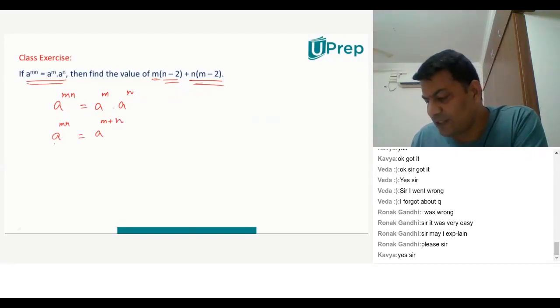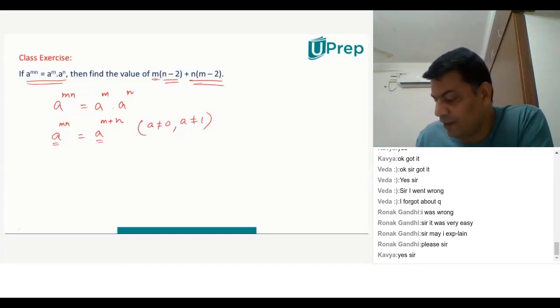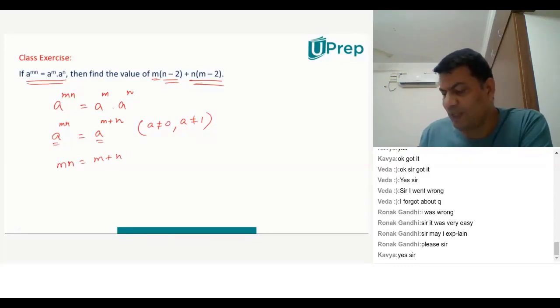When the bases are same, assuming a is not equal to 0, a is not equal to 1, that's a basic assumption, right? And also a is not equal to infinity. We know that. So basically we know that mn is equal to m plus n. That's a relation we know. If mn is equal to m plus n.